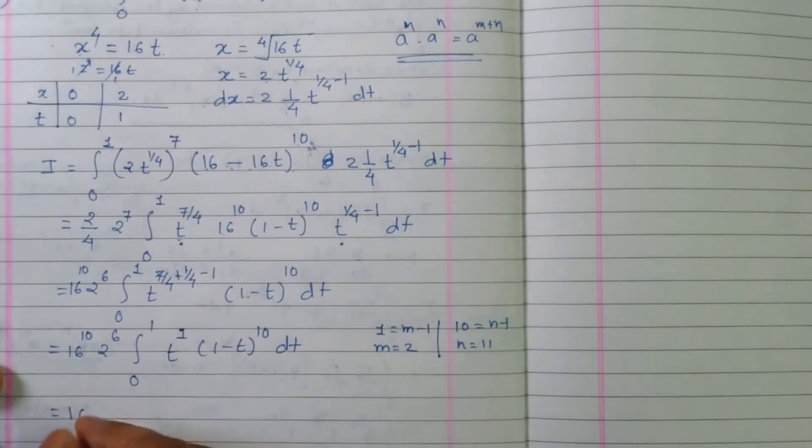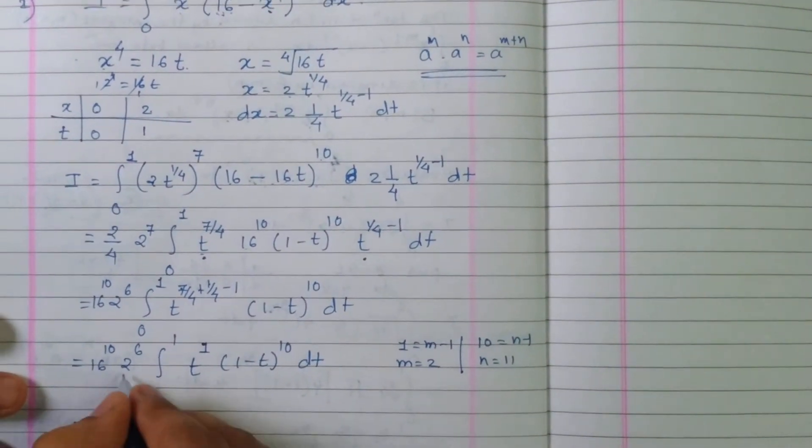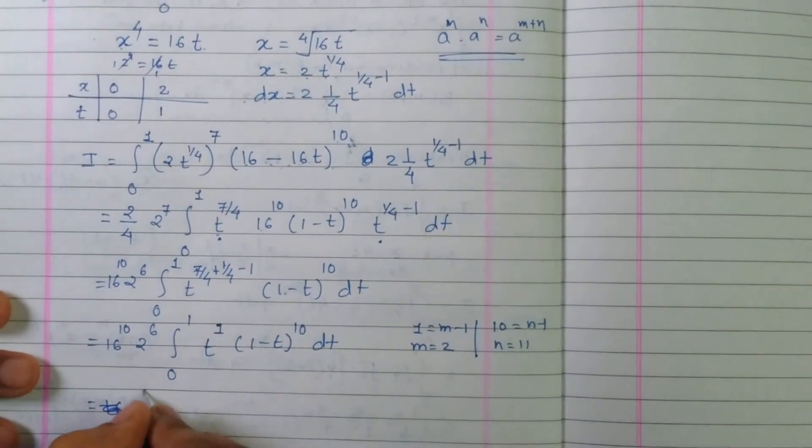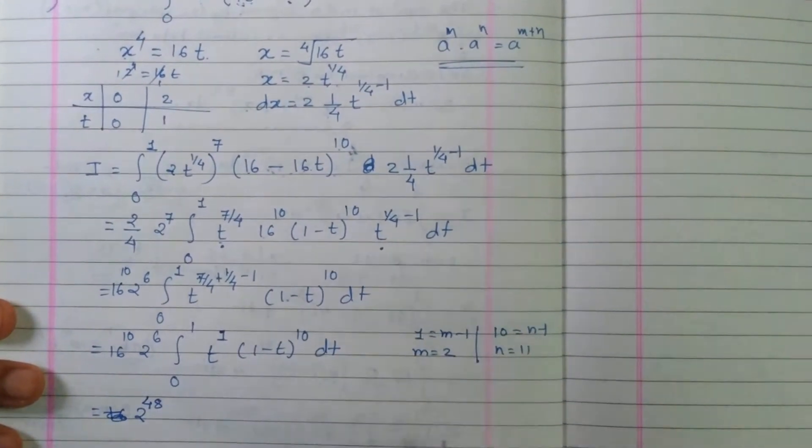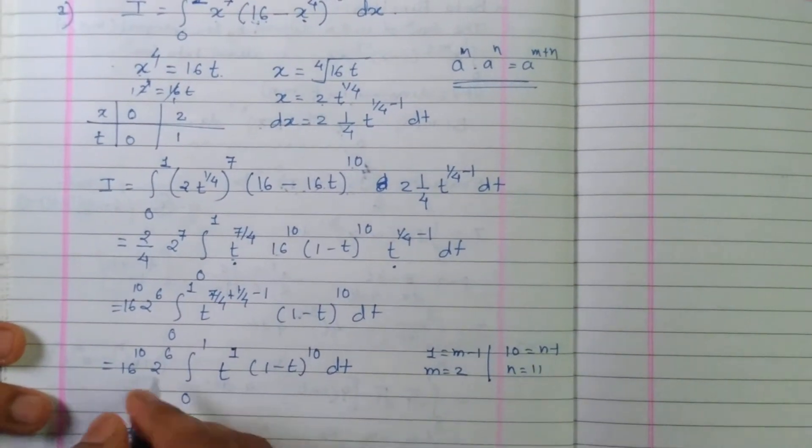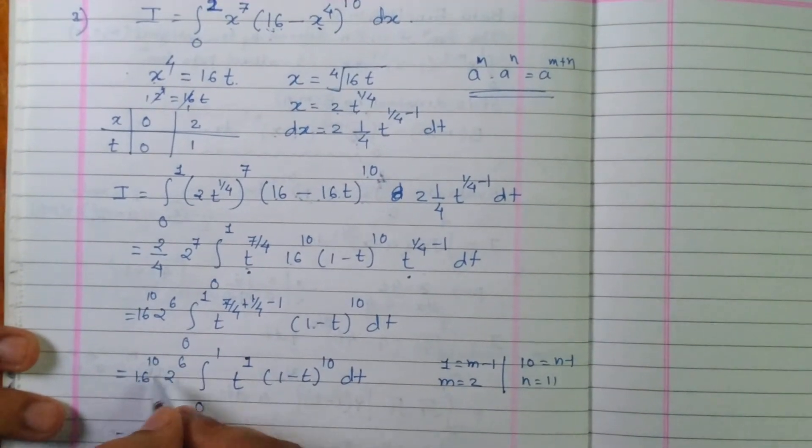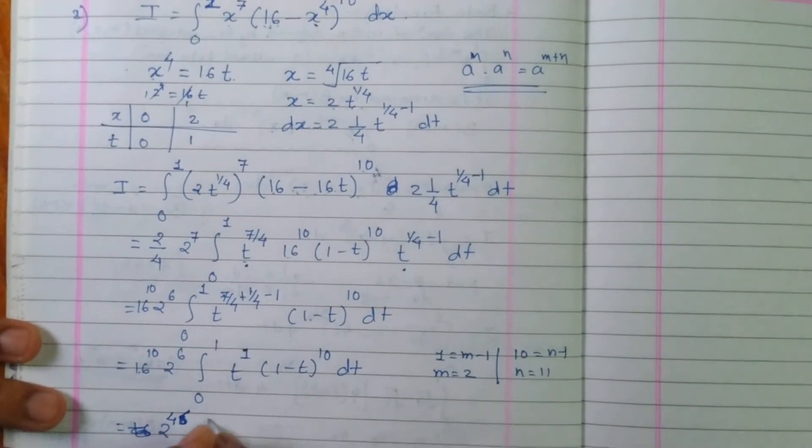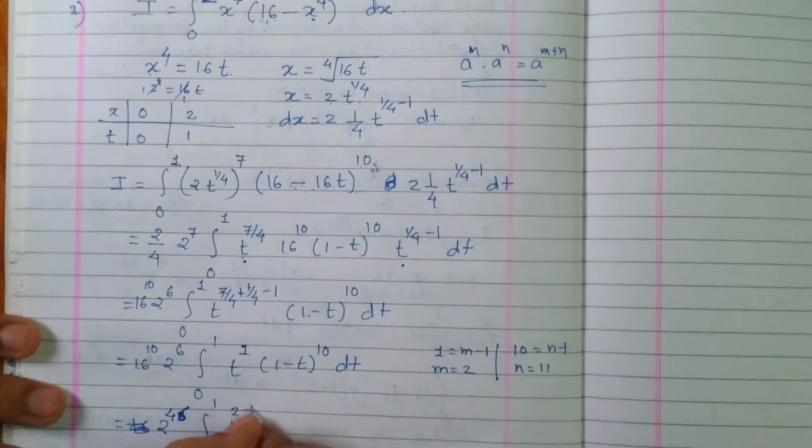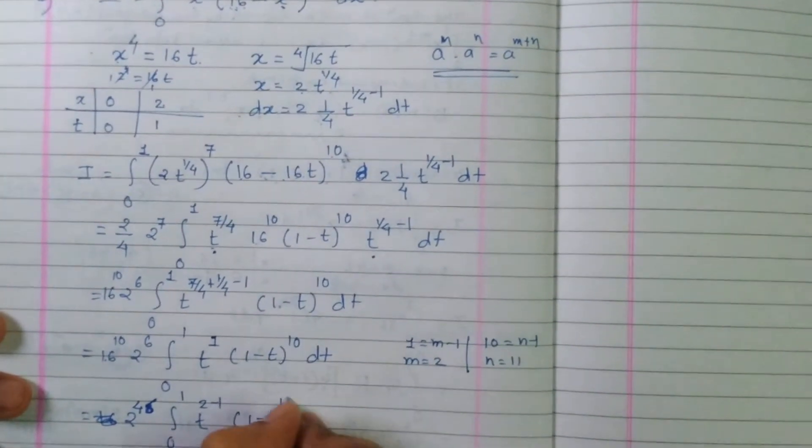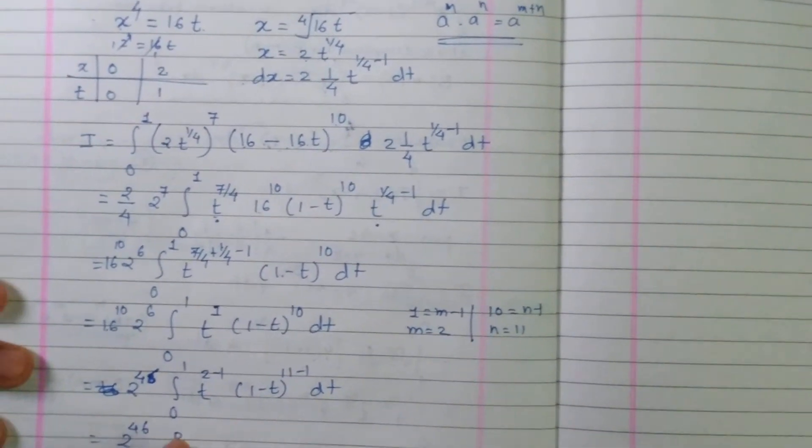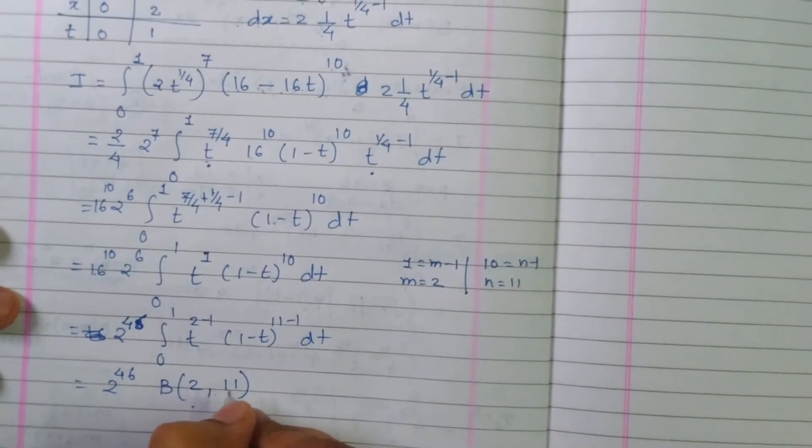So 16 raised to 10 and 2 raised to 6 can be simplified as 2 raised to 46. Integration from 0 to 1, t raised to 2 minus 1, times 1 minus t raised to 11 minus 1, dt. So this is 2 raised to 46 times beta of 2 comma 11.